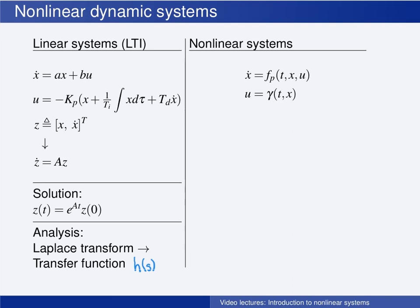The resulting closed loop system, when substituting the control law for u in the differential equation, is then given by some function, we call it f, of the state x, and possibly also the time t.